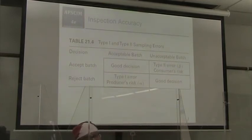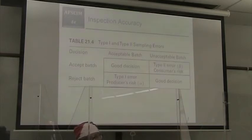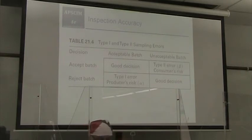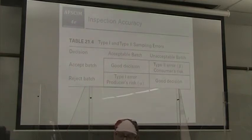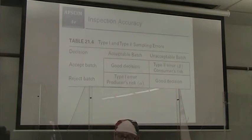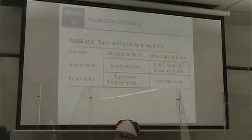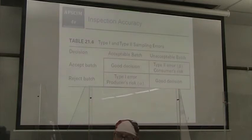When talking about inspection accuracy for batches, we have a decision to accept or reject the batch. If it's an acceptable batch and we accept it, that's a good decision. If we reject an acceptable batch, that is a type 1 error, the producer's risk, an alpha error. If it is an unacceptable batch and we accept it, that is a type 2 error, a beta error, the consumer's risk. If we reject an unacceptable batch, that is a good decision or a hit.